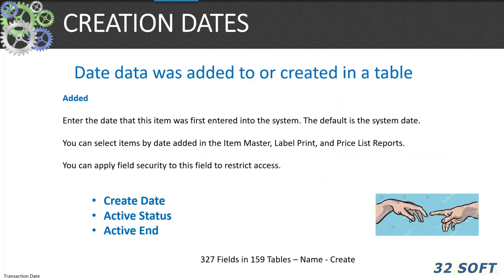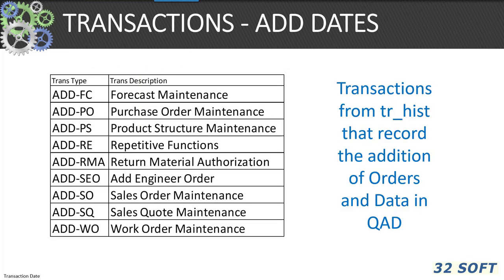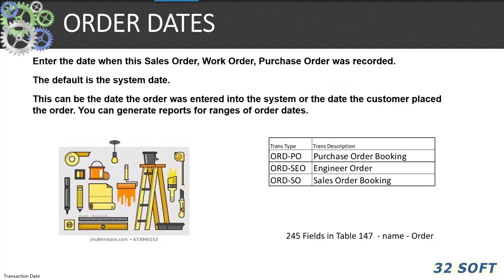Creation dates are the dates that data was added to or created in a table. The default date is the system date. You can select items by creation date in the item master file for reports like price list labels. Transaction add dates from TR_HIST record the addition of order data in QAD. Order dates are the dates an entry of a sales order, work order, or purchase order was recorded — similar to an add date. The default is the system date, and accountants and auditors are normally very interested in these dates, especially with revenue recognition.